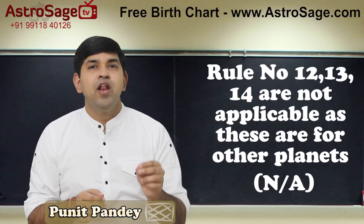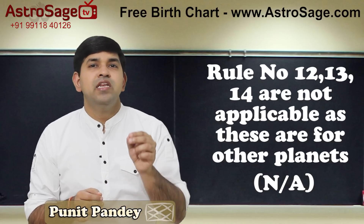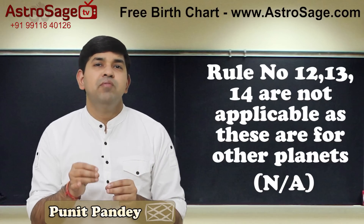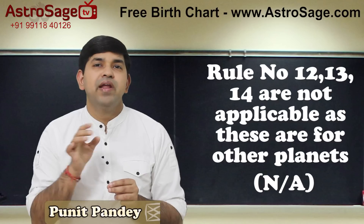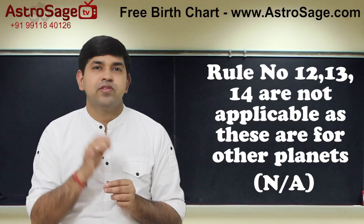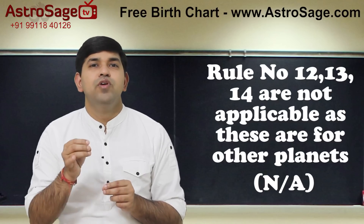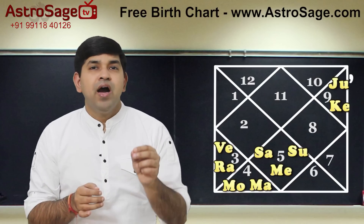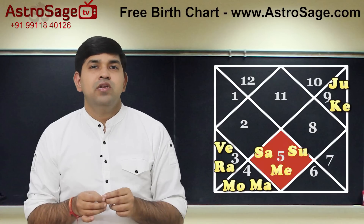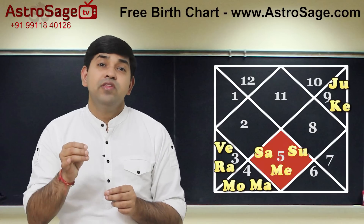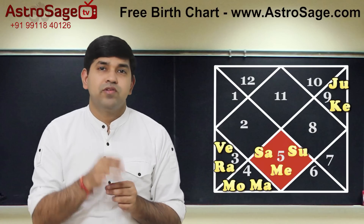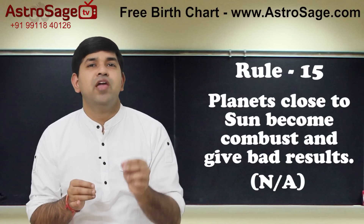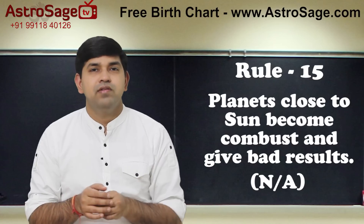Rules 12, 13, and 14 are applicable to other planets and not to Mars, so ignore those rules. Mars is not close to the Sun and hence not combust, so rule number 15 is again not applicable.